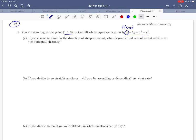Okay so let's look at the first part of this question. They're saying if we choose to climb in the direction of steepest ascent what is our initial rate of ascent relative to the horizontal distance? Okay and the key there is that steepest ascent direction of the steepest ascent. We can find that direction of maximum increase by finding the gradient. So that's our first task here is to take this function and define its gradient.